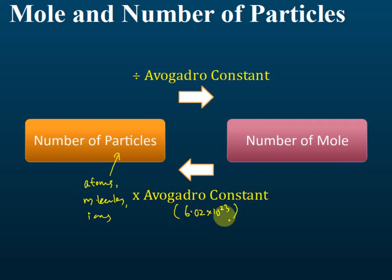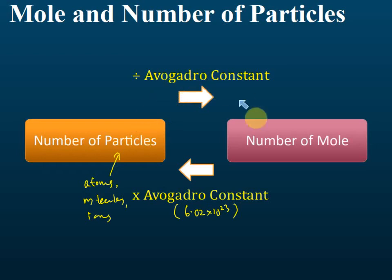But if they give you the number of particles and want you to find the number of moles, we do the reverse — we divide by Avogadro's constant, which is 6.02 × 10²³.